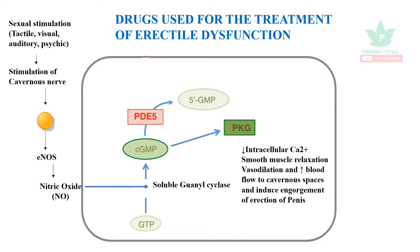Cyclic GMP is metabolized by an important enzyme called phosphodiesterase 5 (PDE5). PDE5 is inhibited by a class of drugs called PDE5 inhibitors: sildenafil, vardenafil, tadalafil, and avanafil. Since PDE5 is blocked, the biological half-life of cGMP is increased, which leads to treatment of erectile dysfunction.